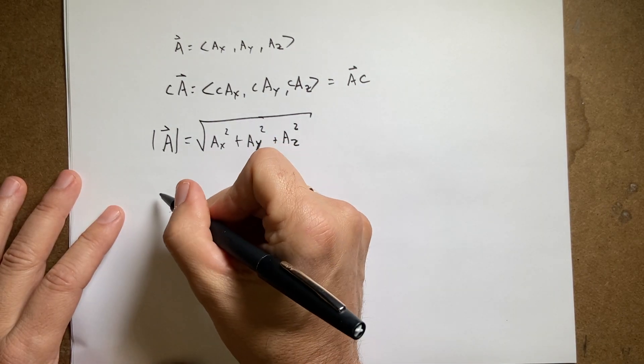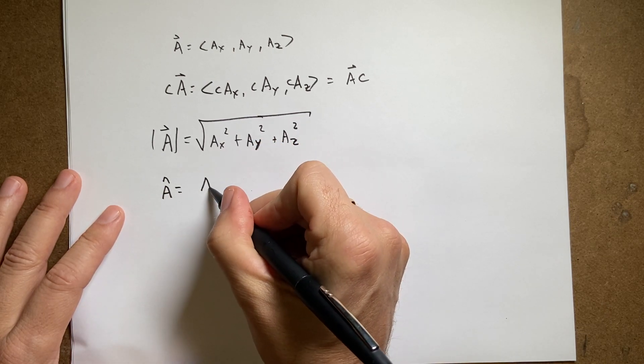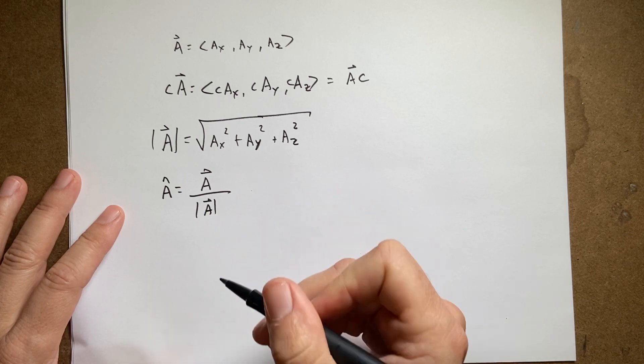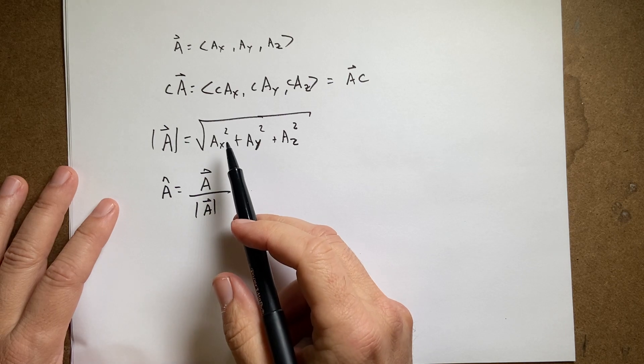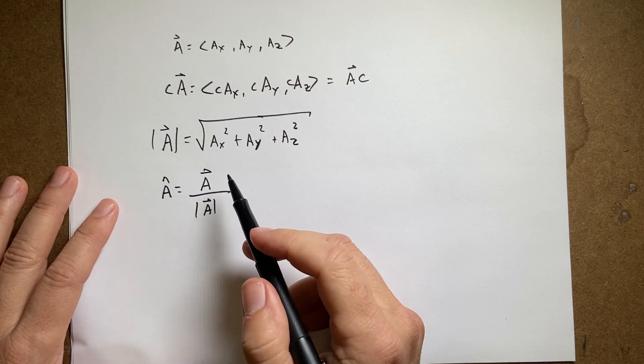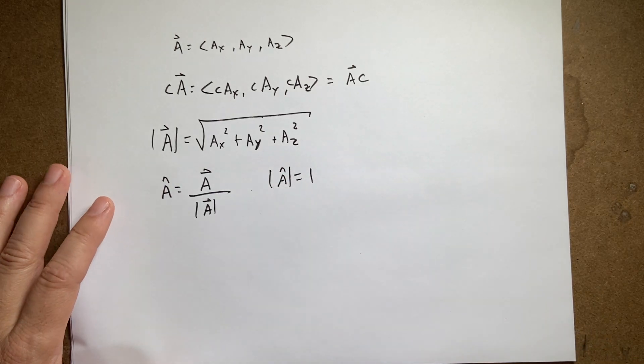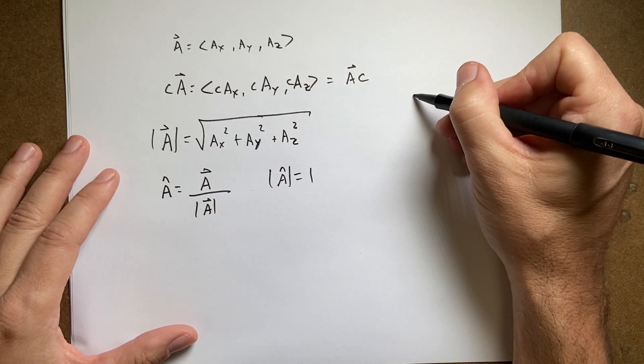Now we have the unit vector, a hat. This is defined as the vector a divided by the magnitude of the vector a. And so we have the vector a. We have the magnitude. The magnitude of a hat is equal to one. And that's really nice. So you may think, oh, what the heck? Who really cares? Here's one example.